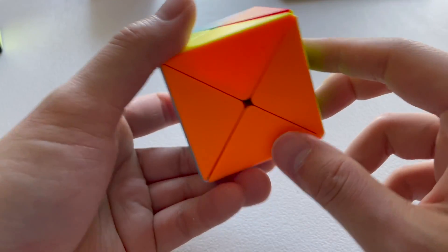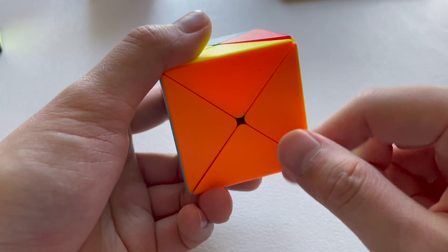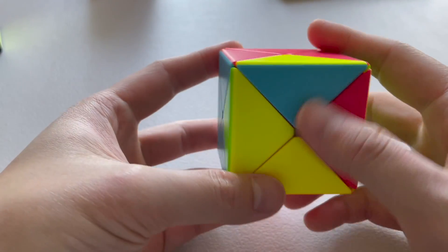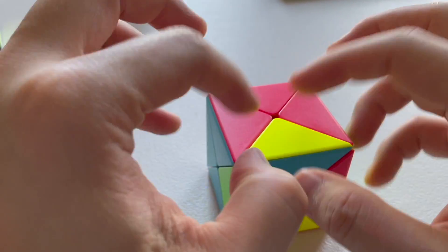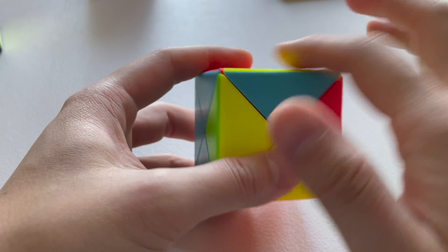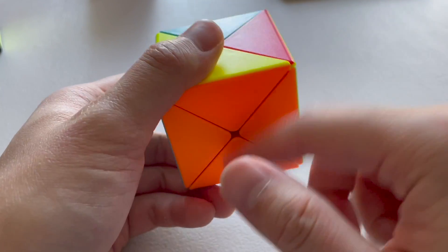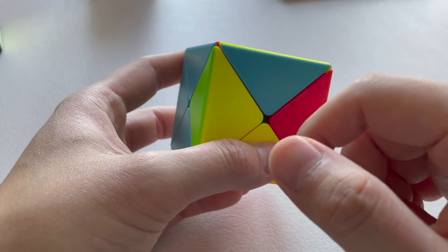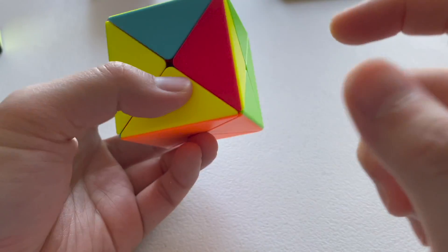So what's important is you keep your fixed face on the bottom. Meaning, so this is orange. I don't want to touch orange because this algorithm affects the top faces, not the bottom face. So this will put red here.